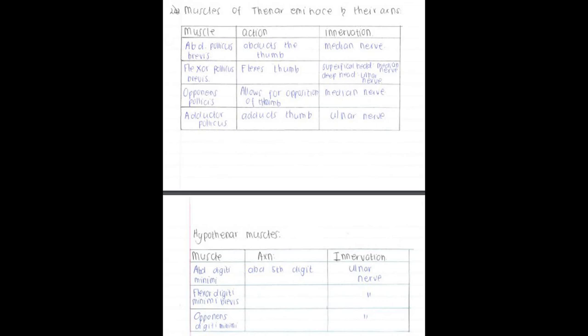For the hand, you need to know your thenar and hypothenar muscles, their innervation, and their actions — you don't need to know the attachments. You also need to know the superficial cutaneous innervation of the hand, which includes your radial nerve, median nerve, and ulnar nerve. If anyone needs clarification, you can contact me via the house committee and I'll answer any questions. Best of luck.